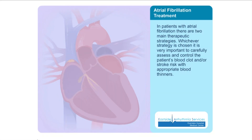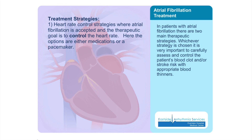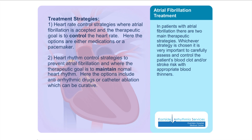In patients with atrial fibrillation, there are two main therapeutic strategies. Whichever strategy is chosen, it is very important to carefully assess and control the patient's blood clot and stroke risk with appropriate blood thinners. Heart rate control strategies accept atrial fibrillation and aim to control the heart rate, using either medication or a pacemaker. Heart rhythm control strategies aim to prevent atrial fibrillation and maintain normal heart rhythm, with options including antiarrhythmic drugs or catheter ablation, which can be curative.